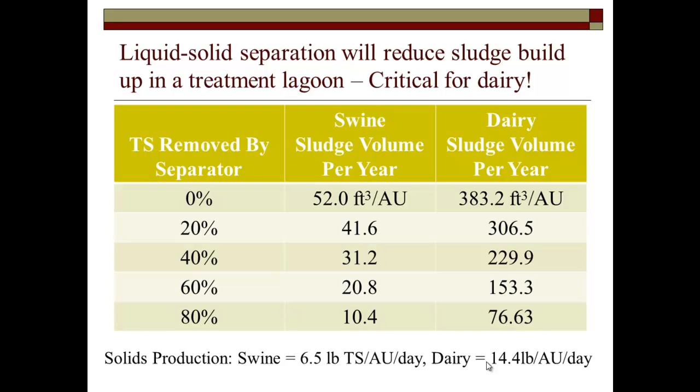Dairy systems produce a lot of sludge. In fact, it's been a long-standing recommendation in the southeast, particularly in South Carolina: if you're going to put a lagoon on a dairy system, you've got to have liquid-solid separation — that's a 30 to 40-year-old recommendation. One of our biggest problems with lagoons in South Carolina, North Carolina, and a lot of places — even ones designed according to the standard — is that nobody managed the sludge. Over time, sludge builds up, you lose treatment volume, and it becomes an uncovered liquid storage that stinks.